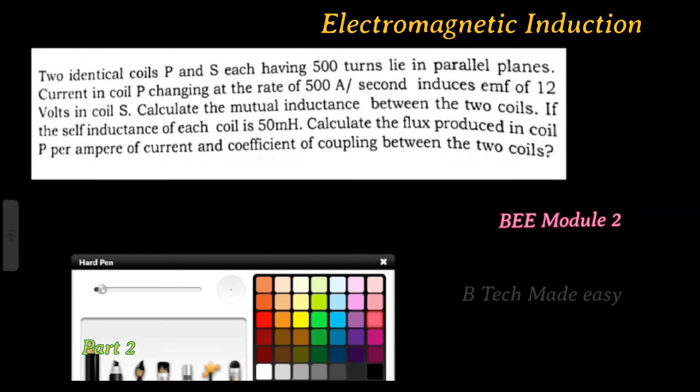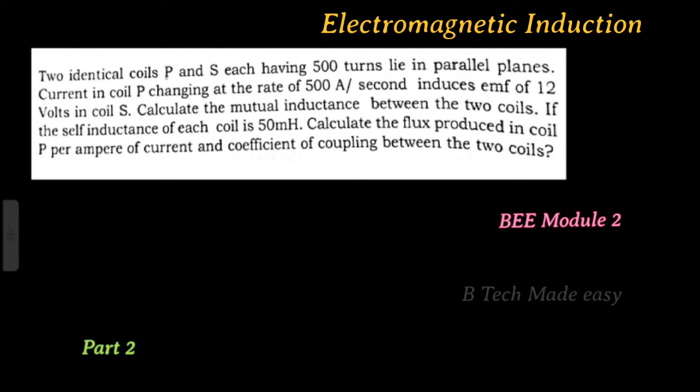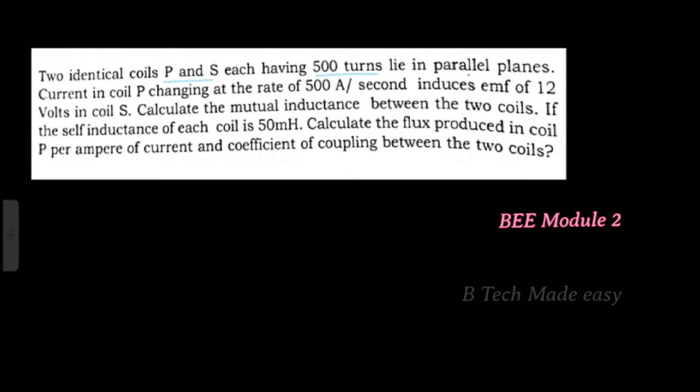Two identical coils P and S, each having 500 turns, lie in parallel planes. The current in coil P is changing at a rate of 500 Ampere per second, which induces an EMF of 12 Volt in coil S.